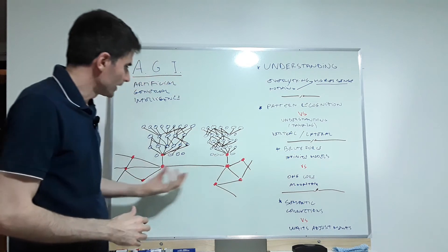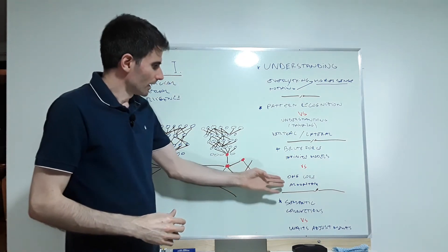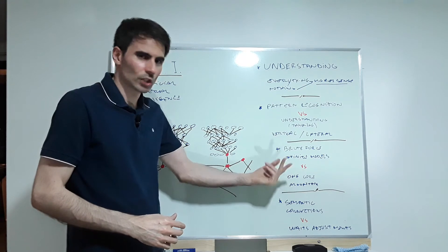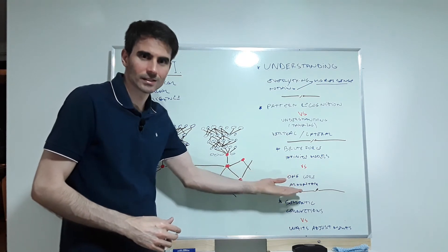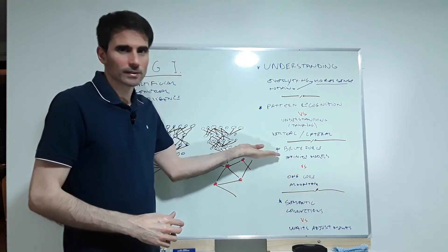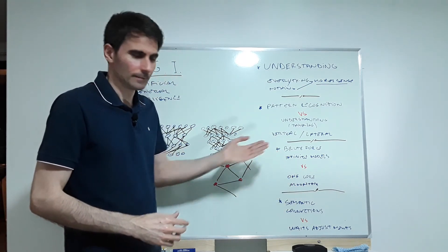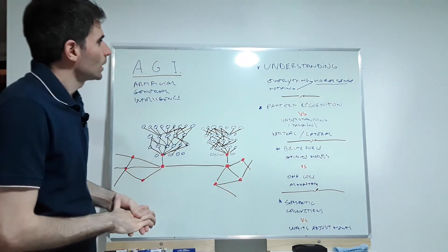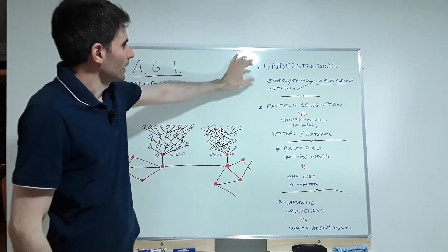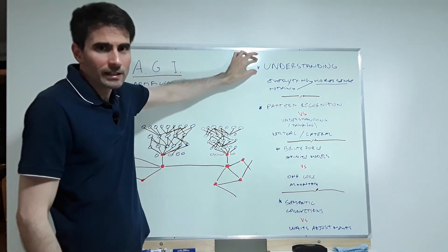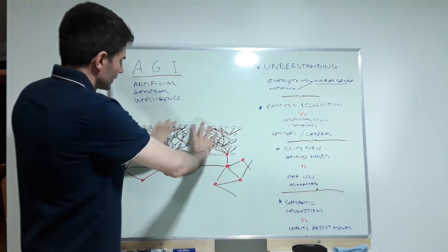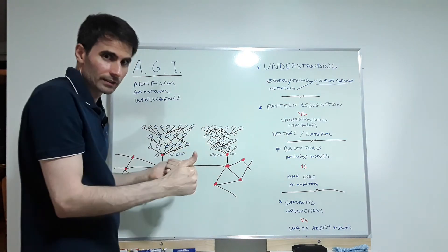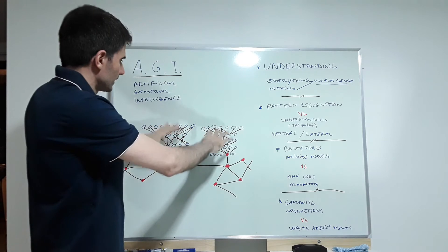In other words, you either solve intelligence — find one core algorithm of how things make sense — or you have to keep doing this indefinitely. Understanding is what's missing. There's better recognition, which is great, but that's maybe 1% of the whole picture.